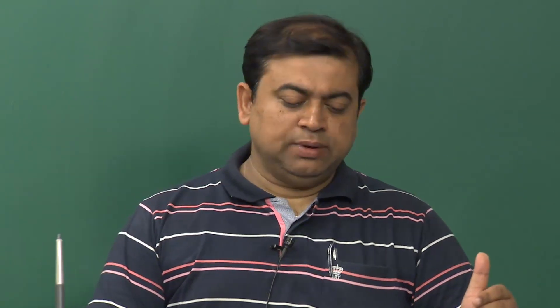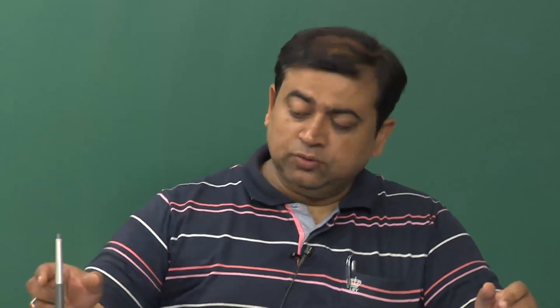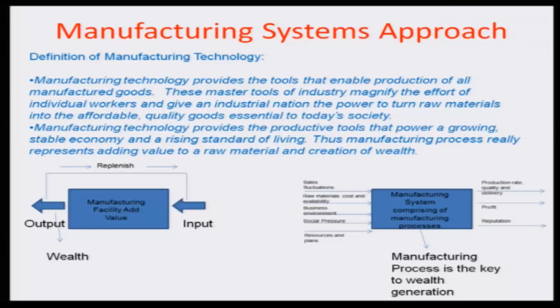Let us look at what manufacturing systems technology really is. Definitionally, manufacturing systems technology provides the tools that enable production of all manufactured goods. These master tools of the industry magnify the effort of individual workers and give an industrial nation the power to turn raw materials into affordable quality goods essential in today's society.